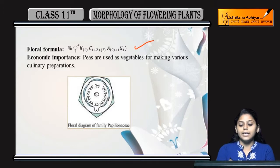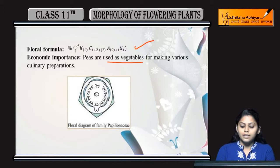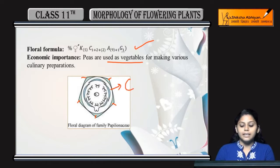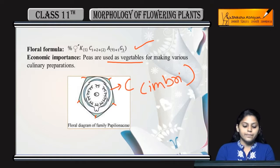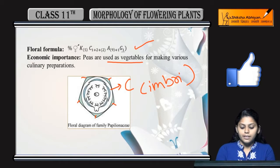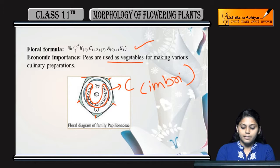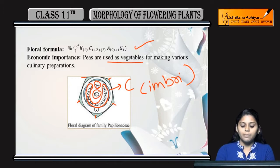Economic importance: they are used as vegetables. The floral diagram shows five sepals, five petals in imbricate arrangement, nine fused anthers plus one, and monocarpellary superior ovary.